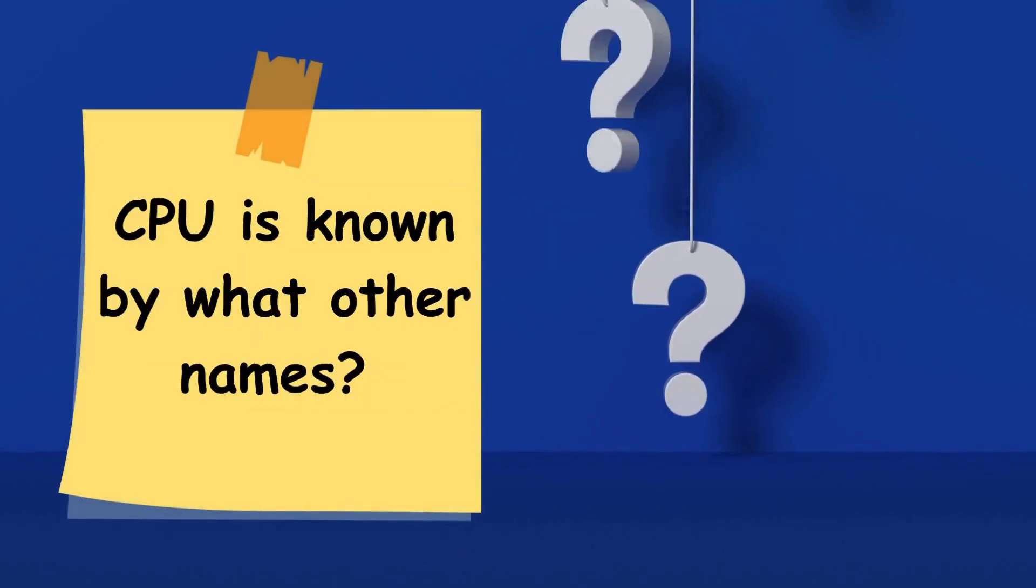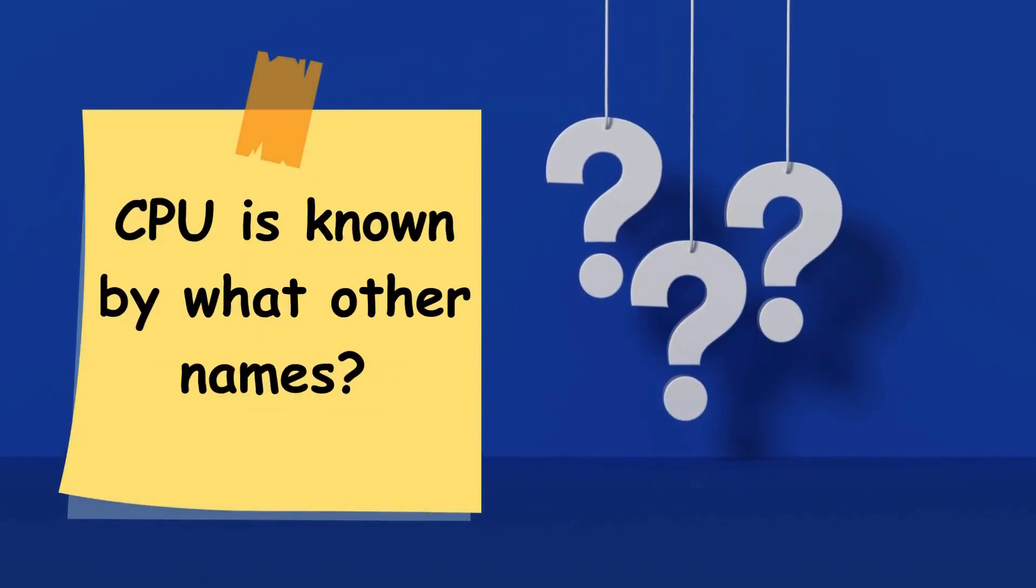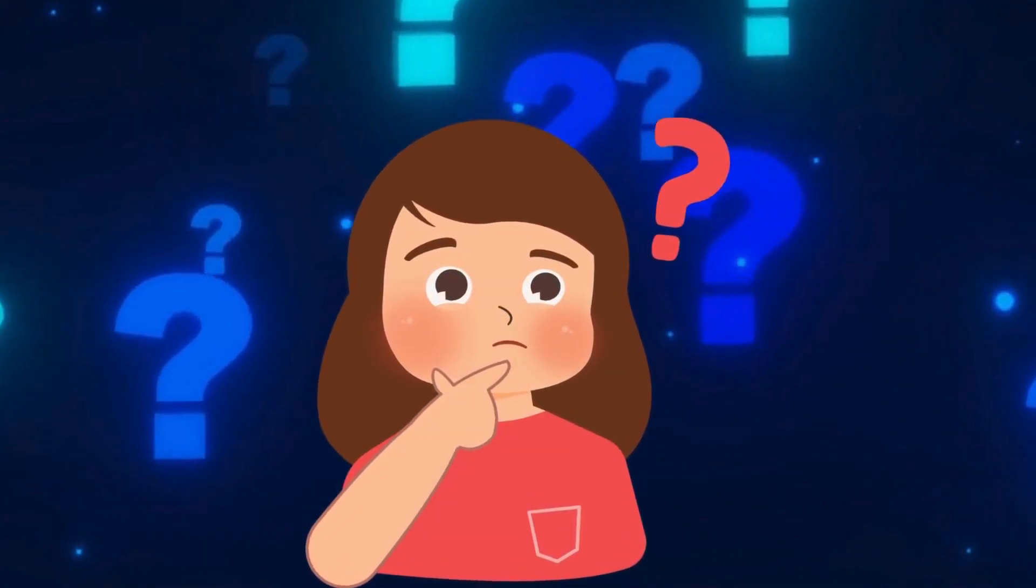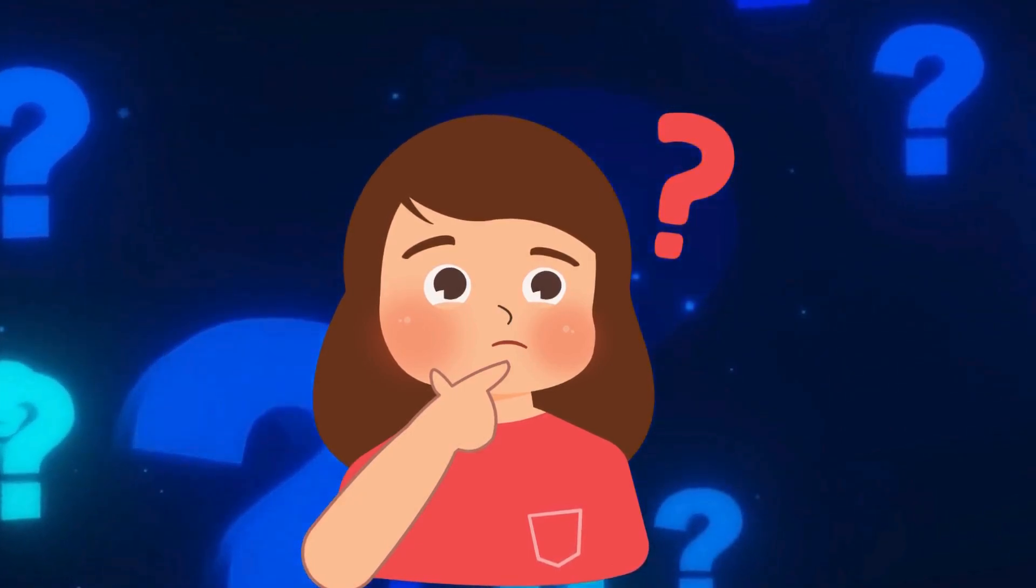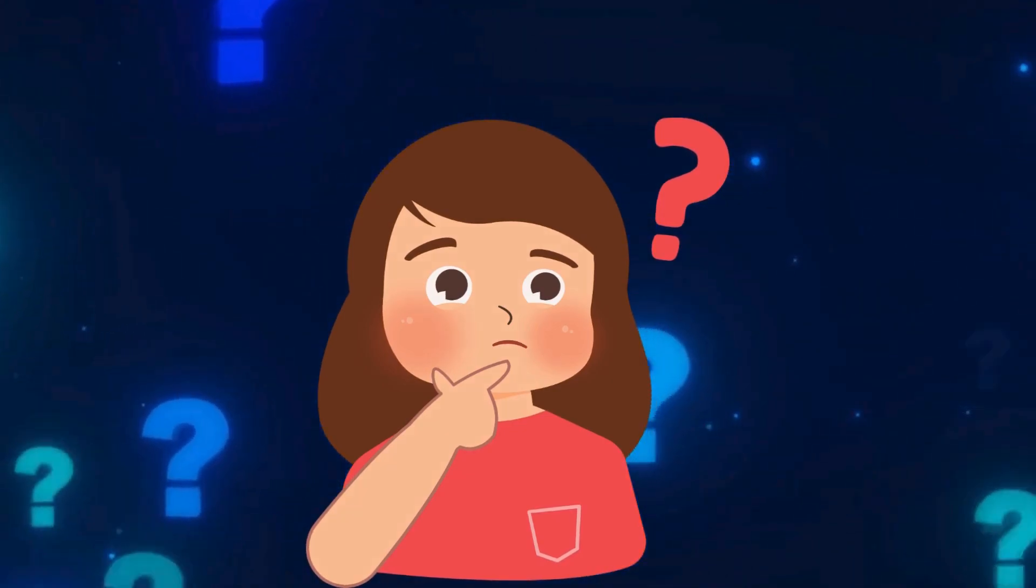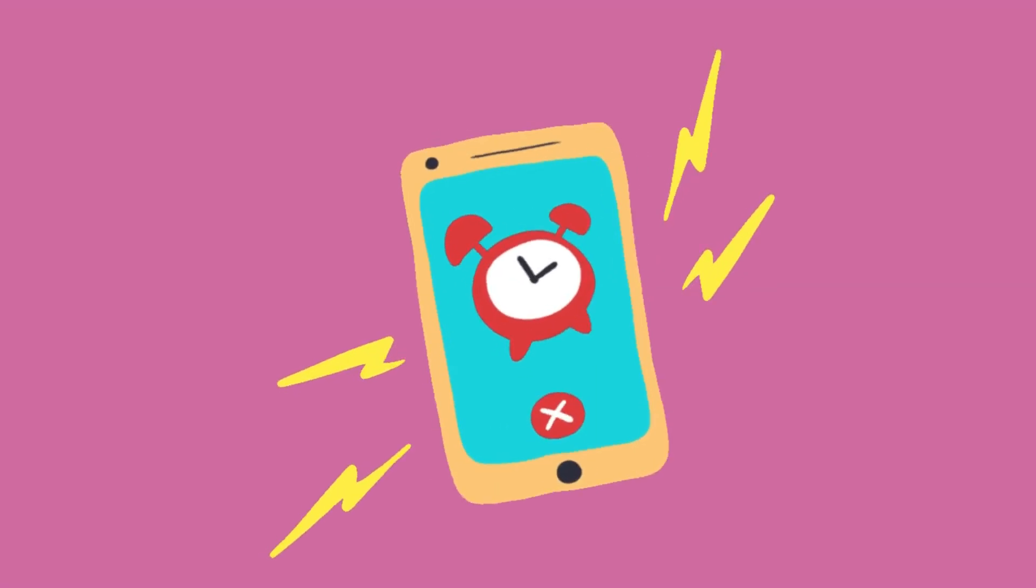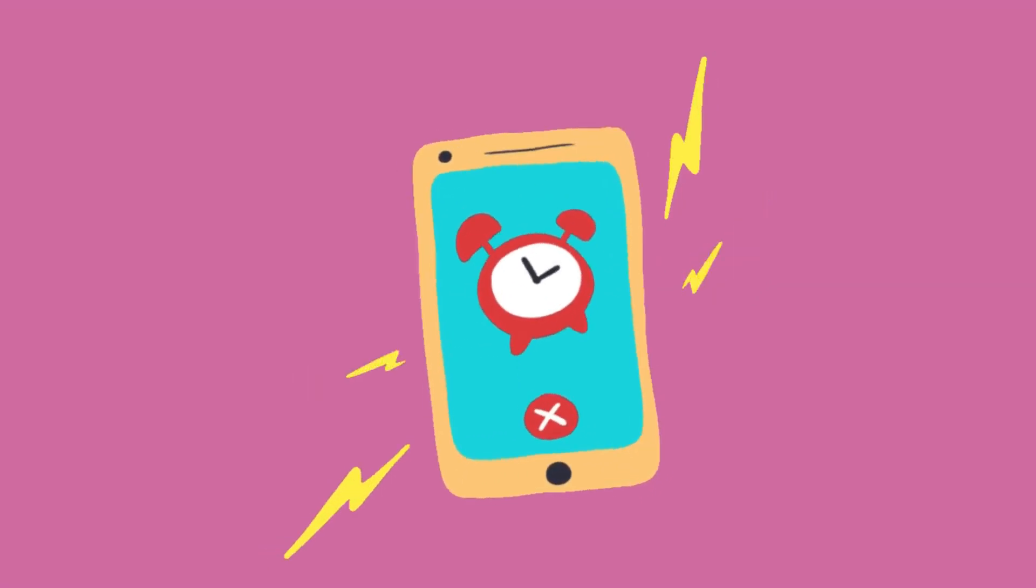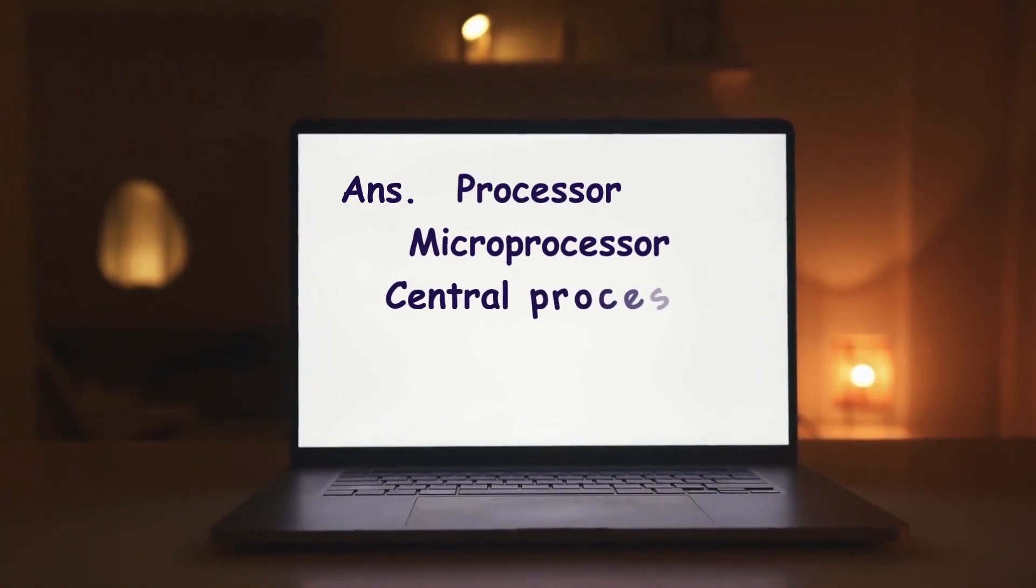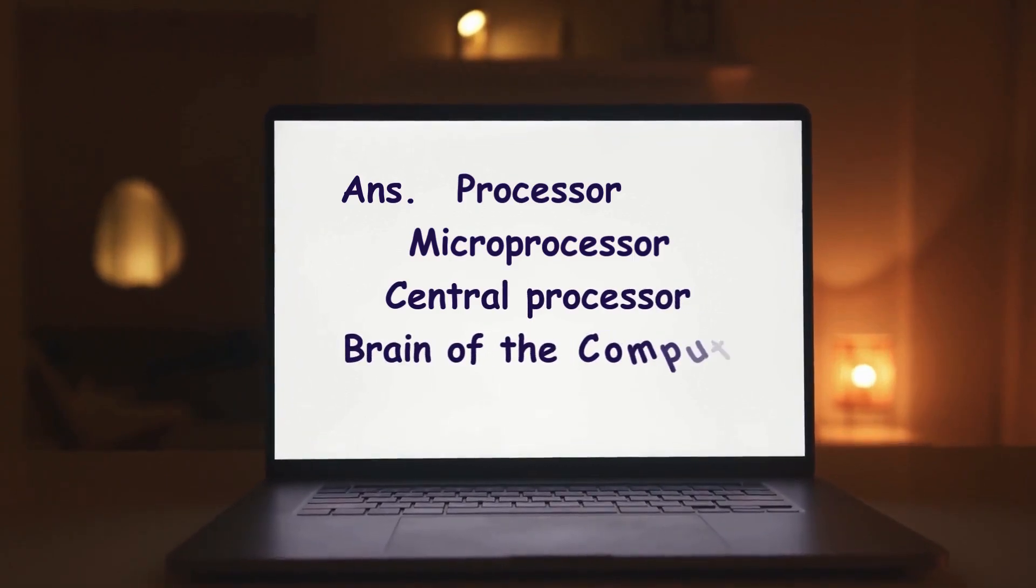Hey buddies! Can you guess? CPU is known by what other names? Time up! And, the answer is processor, microprocessor, central processor, brain of the computer, core.